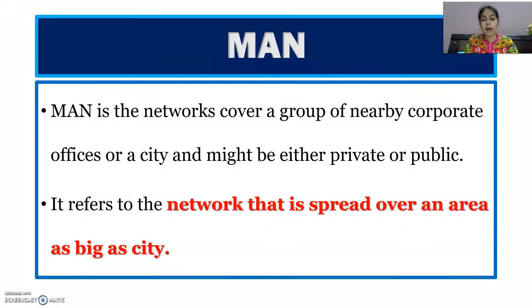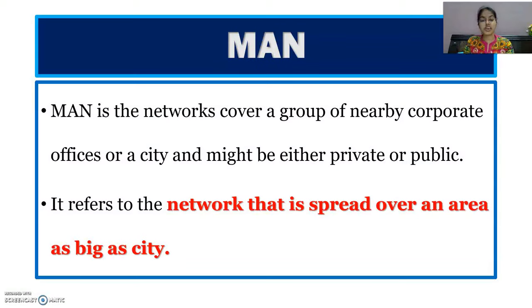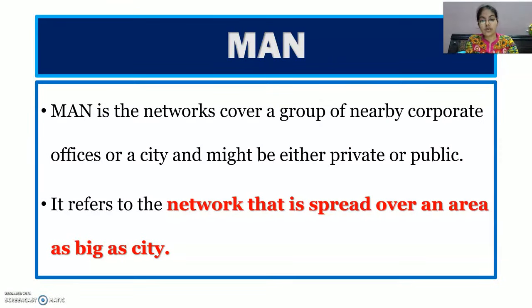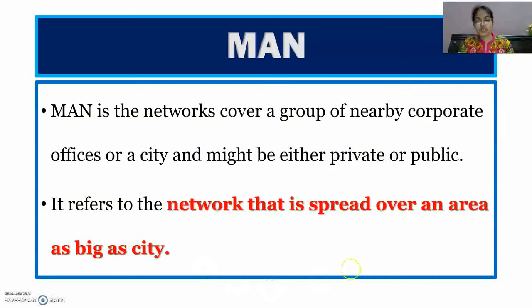Next is MAN — Metropolitan Area Network. MAN's range is bigger than LAN. The order is: PAN, then LAN, then MAN. Metropolitan means within a city — the network within a city is called MAN. MAN covers a group of nearby corporate offices or a city. It refers to a network spread over an area as big as a city.